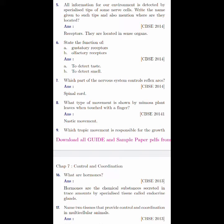They are located in the sense organs. Two questions have been merged, and if it is one mark, one sentence is enough. State the function of gustatory receptors and olfactory receptors. Gustatory receptors detect taste and will be on the taste buds. Olfactory receptors detect smell and will be in the nose. They are present in the sense organs.